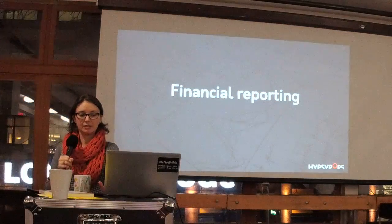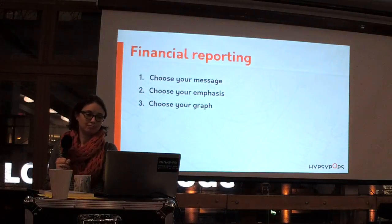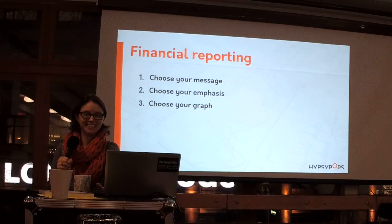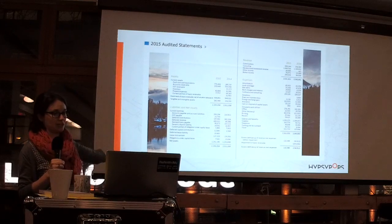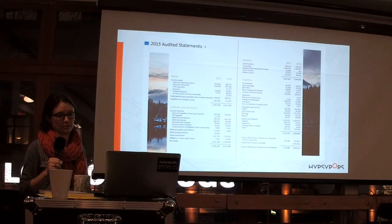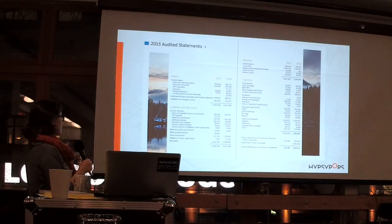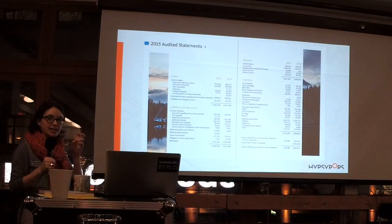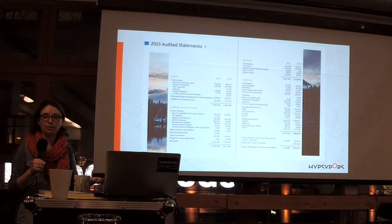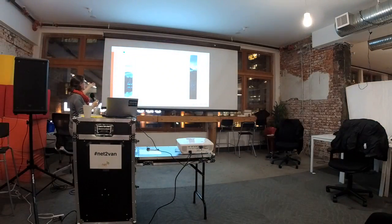And finally, financial reporting — the most exciting of them all. I'm going to pick on Ecotrust Canada because I did their annual report. Financial page — looks like everybody else's. There are a few things going on here that help the reader understand the table, even though it doesn't look like a table you would print out of Excel. You have alignment — all the text is pushed to the left, all the numbers are pushed to the right. That makes it a lot easier for people to skim down and read the numbers.